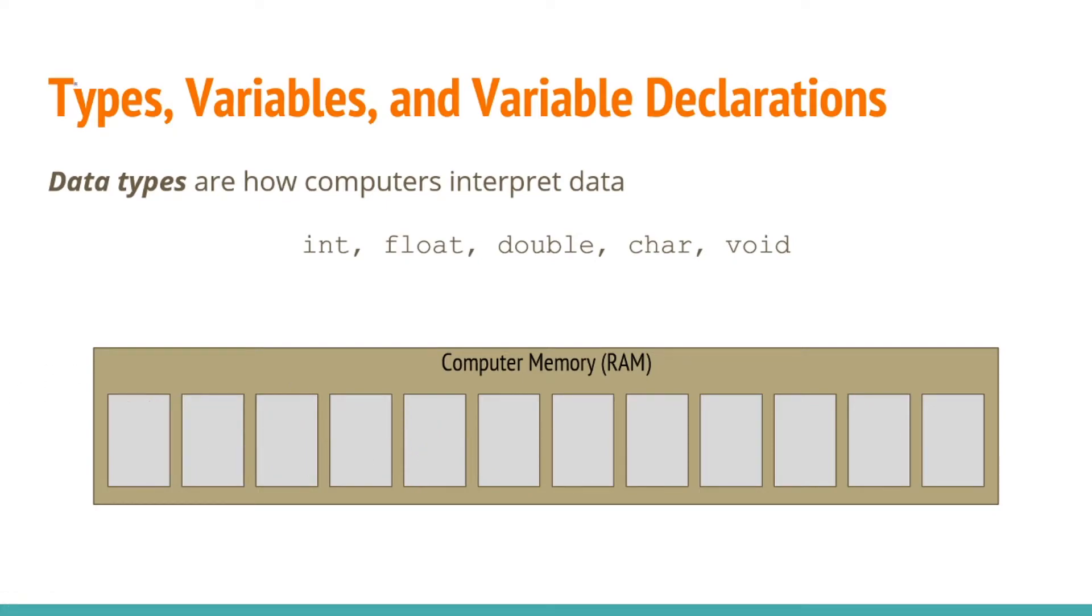Now that we have covered types let's look at variables. A variable pairs a storage address where the memory is allocated to some name that we as developers can use. We saw an example before of int x equals 5. And here our variable name is x as paired to somewhere in memory where this 5 is being stored.